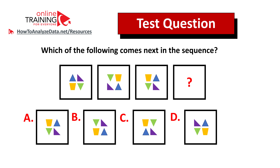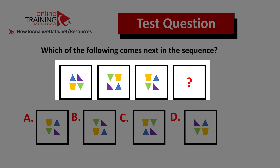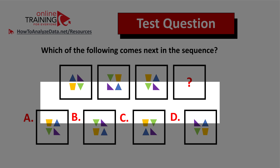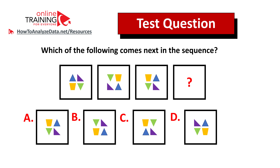Here's a question for you to practice your skills. Which of the following comes next in the sequence? You are presented with a sequence of four different squares — each square contains smaller shapes inside, with the exception of square four which is marked with a question mark. You have four possible choices: A, B, C, and D. Please give yourself 10 to 15 seconds to see if you can come up with the solution.